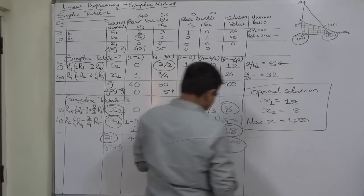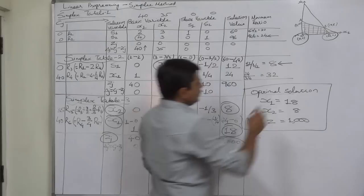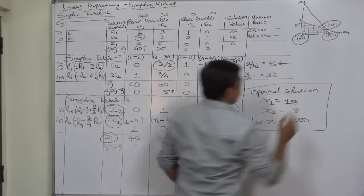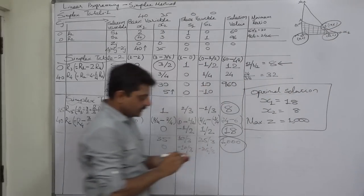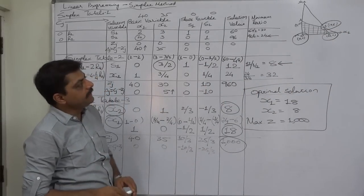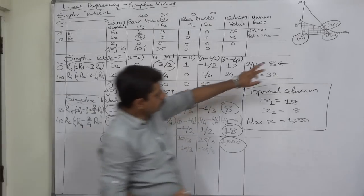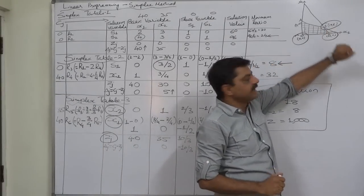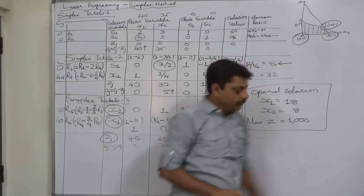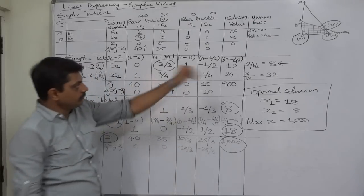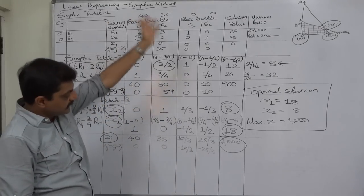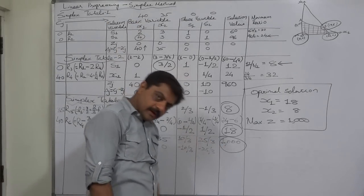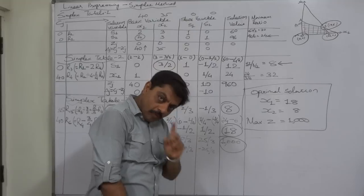This is the optimal solution of the given linear programming problem. In the graphical solution, corner point B is the optimal solution, where x1 is 18 and x2 is 8. Substituting these values into the Z function gives a value of 1000, confirming the result.